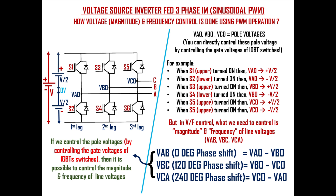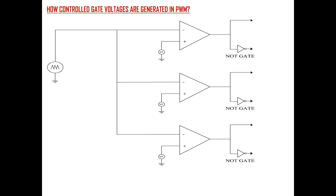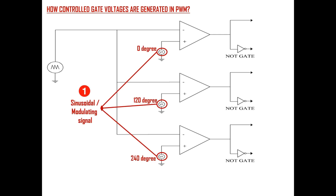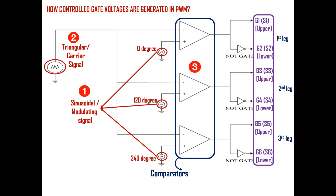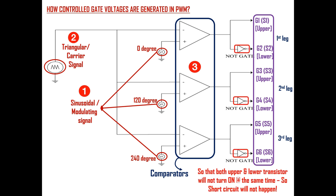The question is: how can controlled gate voltages be generated using PWM method? We can consider the generation of controlled gate voltage as a three-step process. First, create three sinusoidal signals called modulating signals with 120 degree phase shift. Second, create one triangular signal called the carrier signal. Third, each sinusoidal signal and the triangular signal are compared using three comparators, whose outputs generate the gate voltages for the upper and lower switches of each leg. Gate voltages to the lower switches S2, S4, and S6 are given through a NOT gate, so both transistors in the same leg will not turn on simultaneously, avoiding a short circuit.